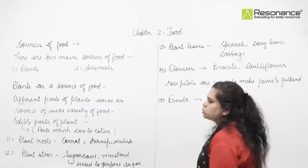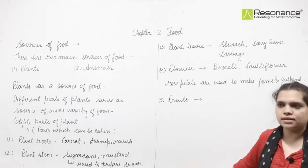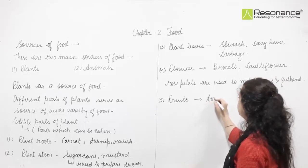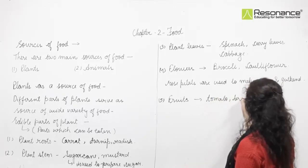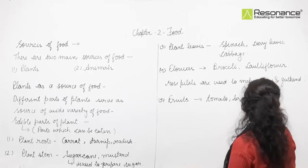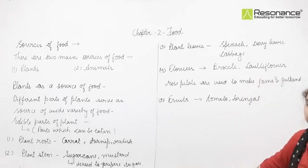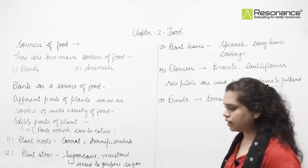Some fruits are also consumed as food. For example, tomato and brinjal — these are also used as vegetables.